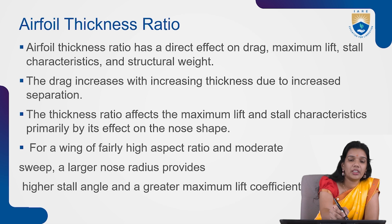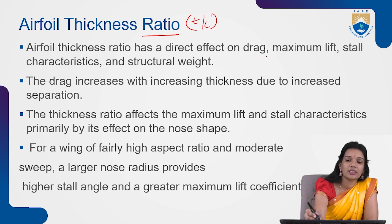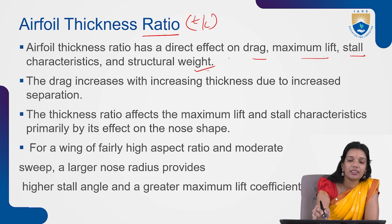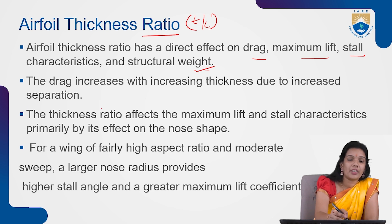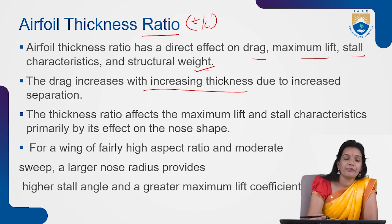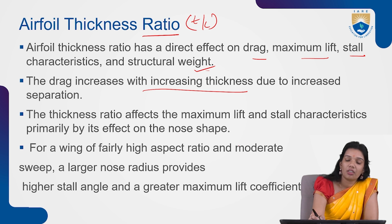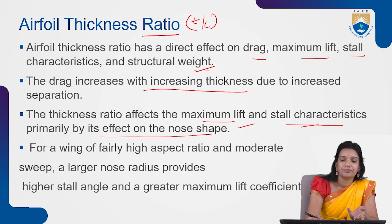Next is the airfoil thickness ratio, designated as t/c. The thickness ratio has a direct effect on drag, maximum lift, stall characteristics, and structural area. Drag increases with thickness ratio due to increased flow separation. When flow separates over a period of time, drag increases. Thickness ratio also affects maximum lift and stall characteristics through its effect on nose shape — depending on the nose shape, you will have such flow separation and stall characteristics.